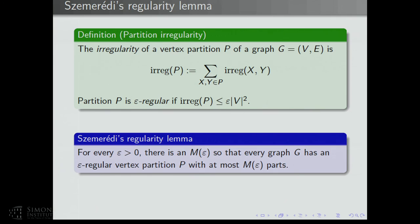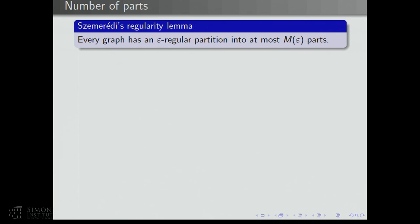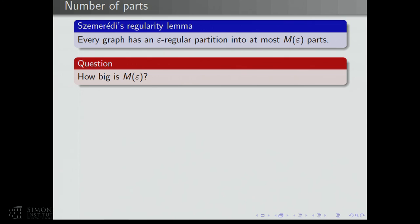This number of parts only depends on epsilon — it has nothing to do with the size of the graph. Every graph has this nice decomposition. A very important question is: how big is M(epsilon)? This matters greatly because the regularity lemma has an enormous number of applications, and you get good quantitative bounds if M(epsilon) is small.